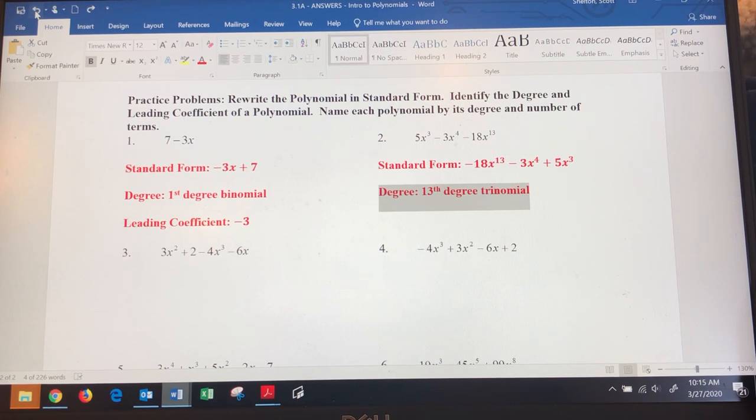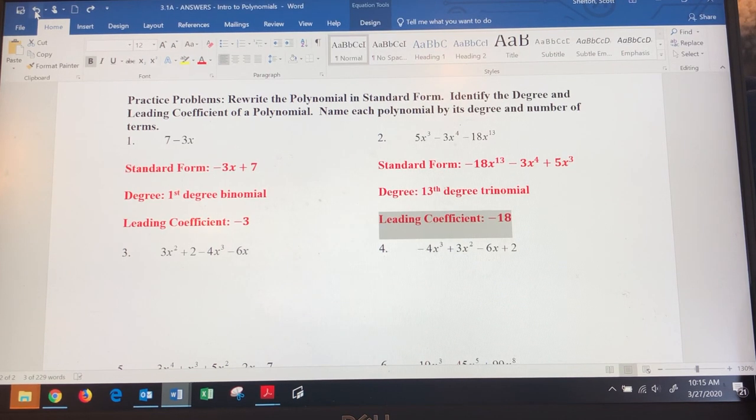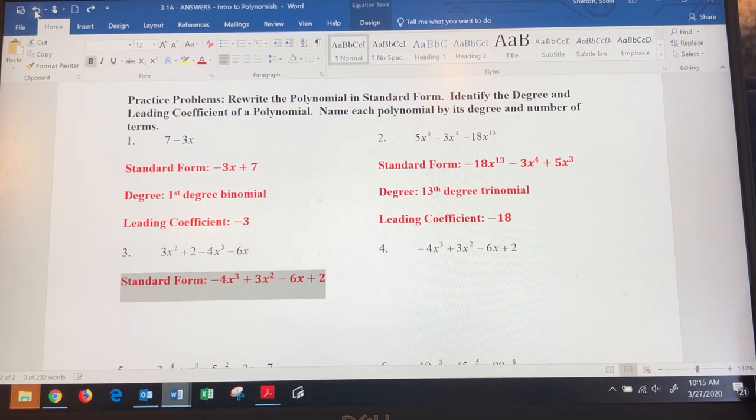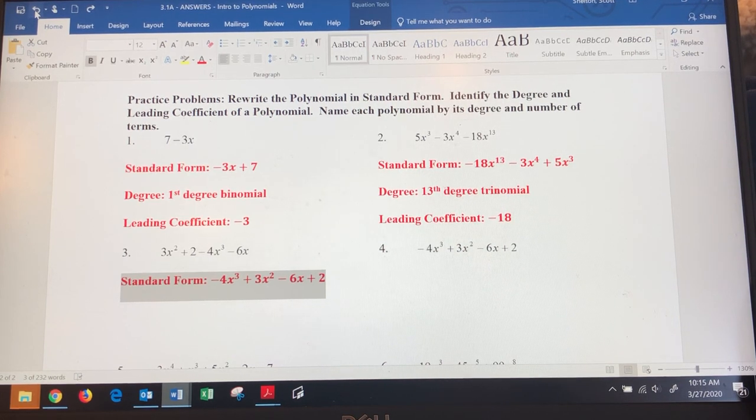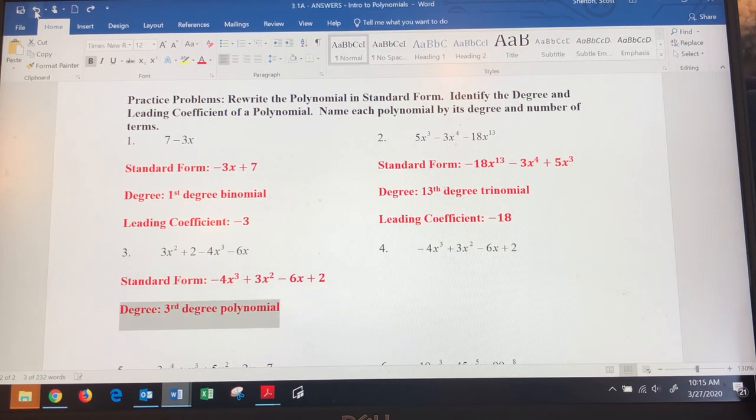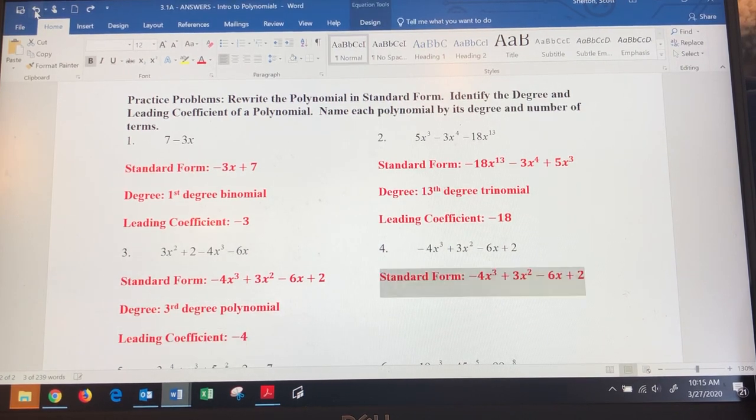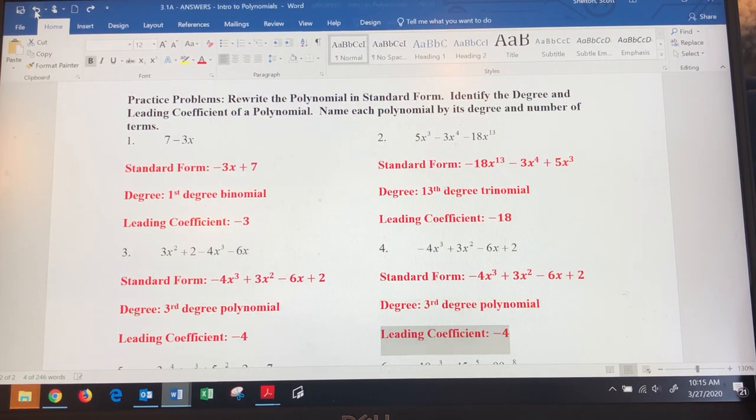Number three: we rearrange that in standard form. It's the exact same polynomial as number four, it's just been written in the correct order now. You can see that for both of these, three and four, it's a third degree polynomial with a leading coefficient of -4. In problem four it was already in standard form, so there was no reason to rewrite that.